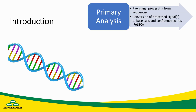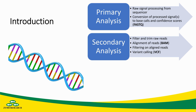This is part of a larger process consisting of a primary analysis, which is analyzing raw signal from a sequencer and converting it to base calls and confidence scores — that will make up our FASTQ file. Secondary analysis takes that FASTQ file, does some quality control filtering and trimming on the raw reads, alignment of the reads to a reference genome to create a BAM or SAM file, filtering of these aligned reads, often getting rid of poor alignments or unalignable reads, and doing variant calling to create a VCF file.